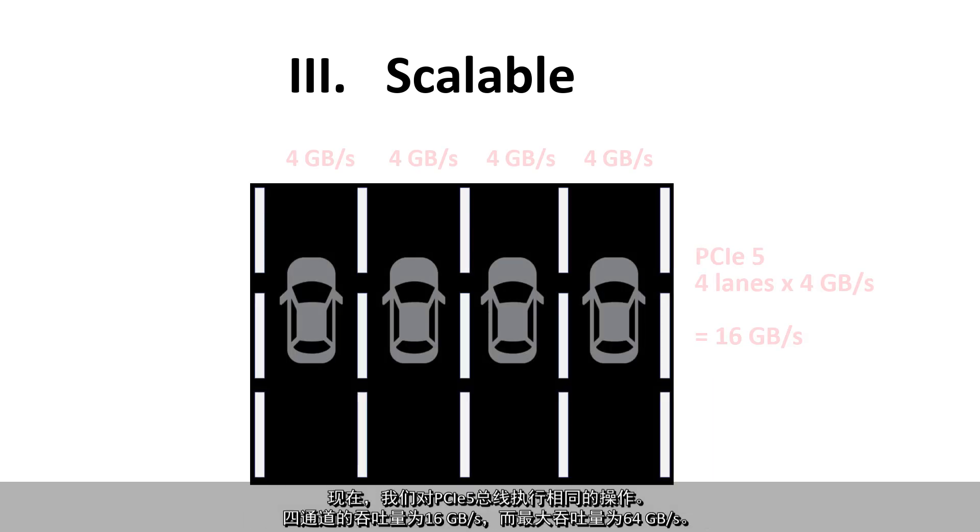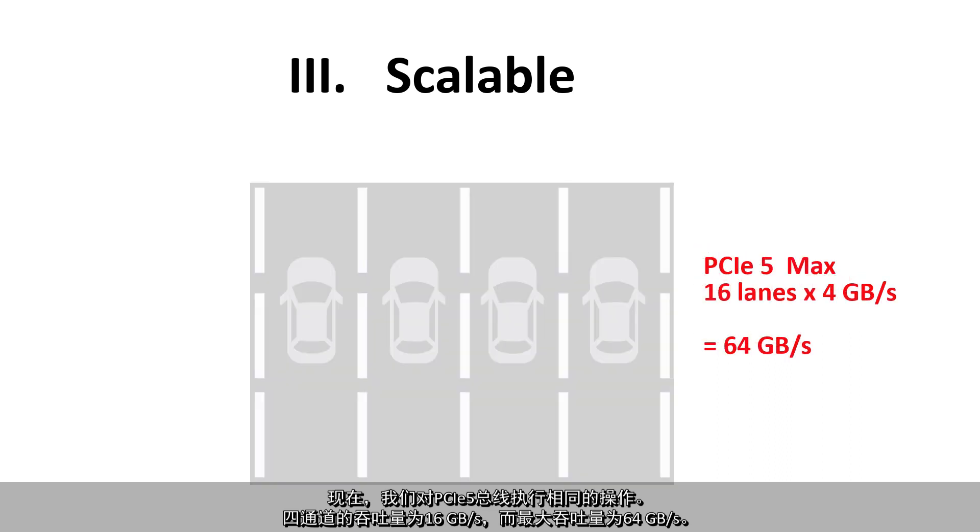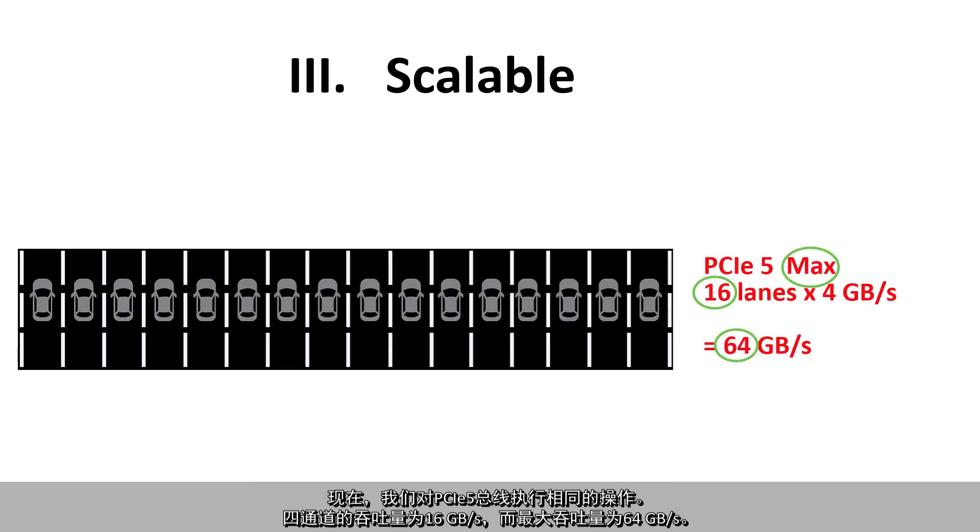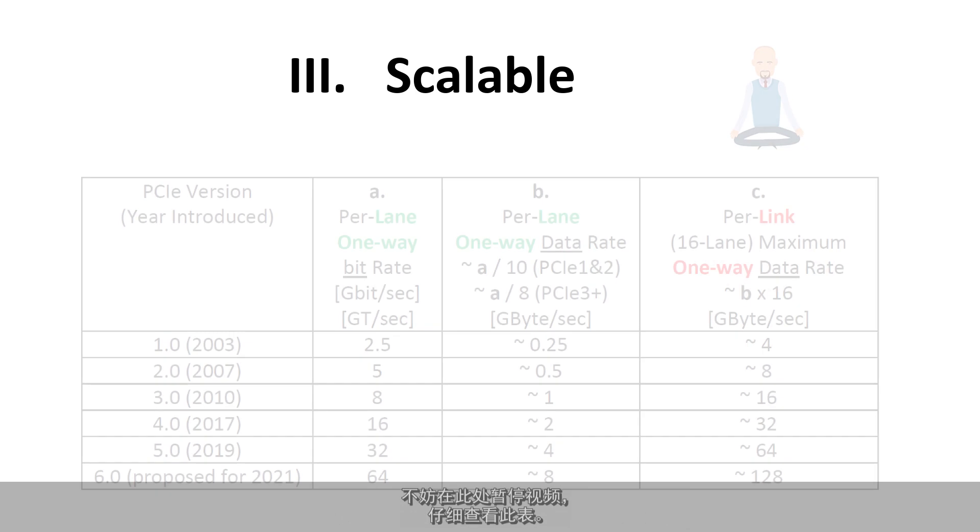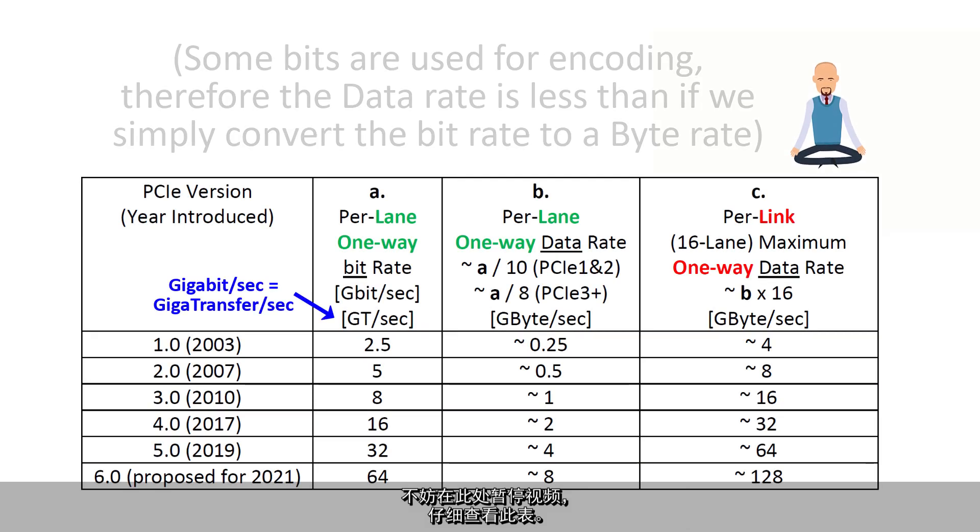Now let's do the same for a PCIe 5 bus. Four lanes has a capability of 16 gigabytes per second, and the maximum throughput is 64 gigabytes per second. You may want to pause the video here to look at this table more closely.